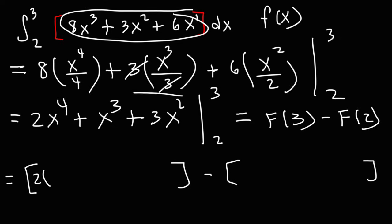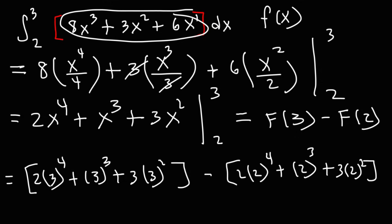So let's plug in 3 into this expression. So it's going to be 2 times 3 raised to the fourth power plus 3 raised to the third power plus 3 times 3 squared. Now let's substitute x with 2 in the second set of brackets. So we have 2 times 2 to the fourth power plus 2 to the third plus 3 times 2 squared.